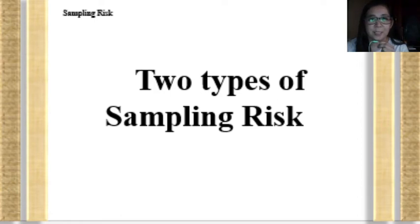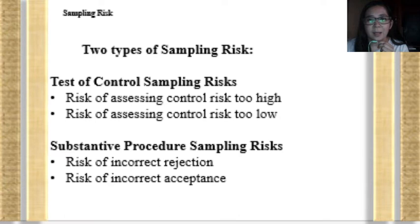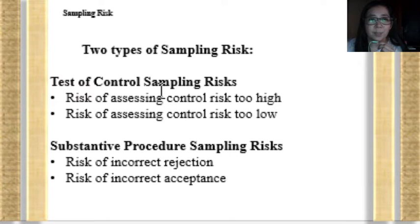For this next video lecture, this is the continuation of sampling risk. We will be discussing the two types of sampling risk. We have the test of controls sampling risk and substantive procedure sampling risk, and for each of these types of sampling risk, we also have two different classifications of risk under each.